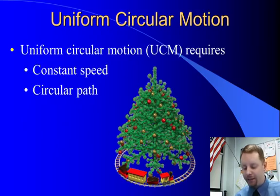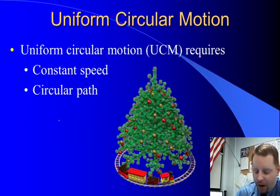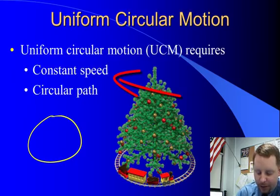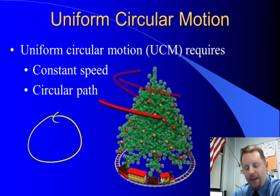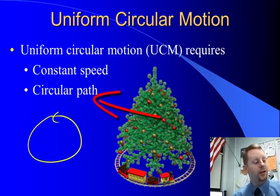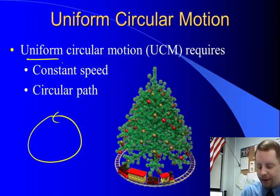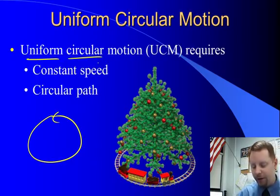So let's dive right in. Uniform Circular Motion requires two things: constant speed for an object moving in a circular path. Pretty straightforward conditions for uniform, constant speed, circular motion.